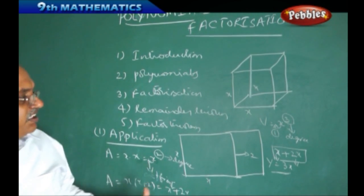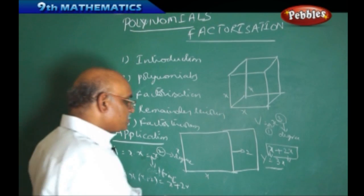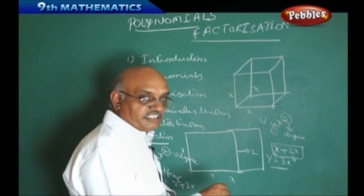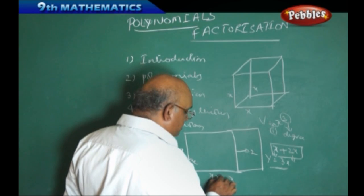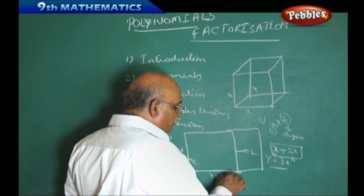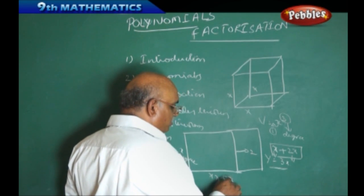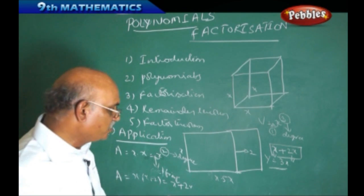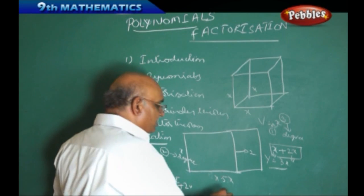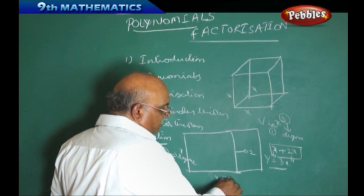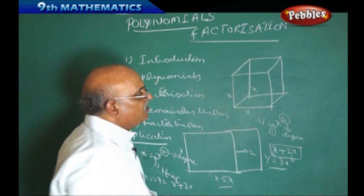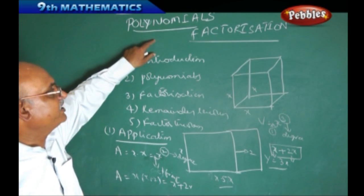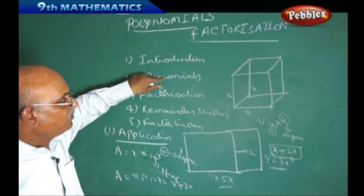Suppose even if you take an age-wise example: if a person's present age is x, then about 5 years back his age was x minus 5 years. Now if you want to find out what his age is going to be after 10 years, we can apply the polynomials concept in this regard. Therefore, there are so many varieties of applications regarding polynomials.